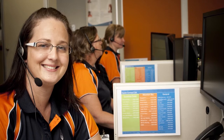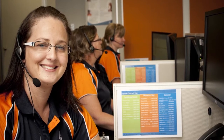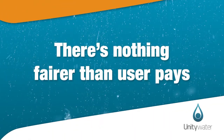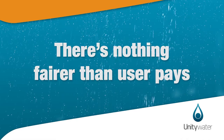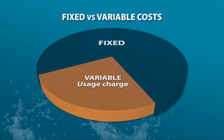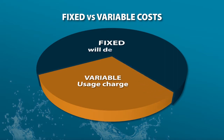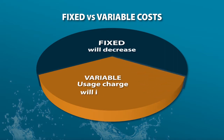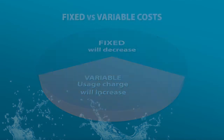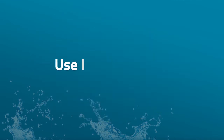And we've listened. There's nothing fairer than user pays. So in Unity Water's new pricing structure, fixed access charges for water and sewerage have been reduced, and variable usage charges will make up a larger proportion of your bill. So those who use less, pay less.